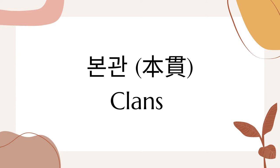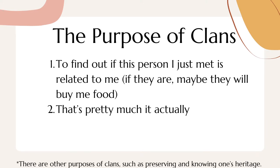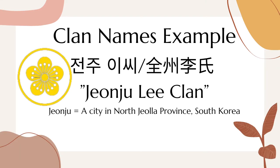To understand the Korean family name system, we first need to understand the concept of clans, called Bonkwan in Korean. This is a concept that doesn't exist in other modern East Asian cultures, and also isn't displayed in modern Korean names. Because Korean family names are limited in diversity, Koreans often need to reveal their clan names in order to find out if someone is related to them or not. Clan names usually consist of the geographical location of where the clan founder was from. For example, the Jeonju Lee clan, which was the royal family of the Joseon dynasty, was named after the hometown of its founder, Lee Han, from Jeonju.